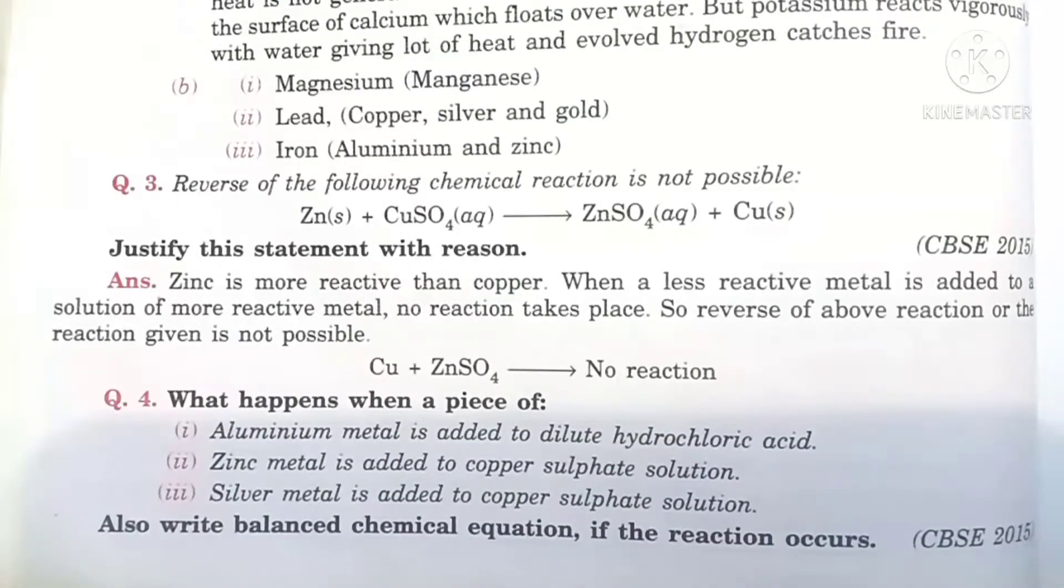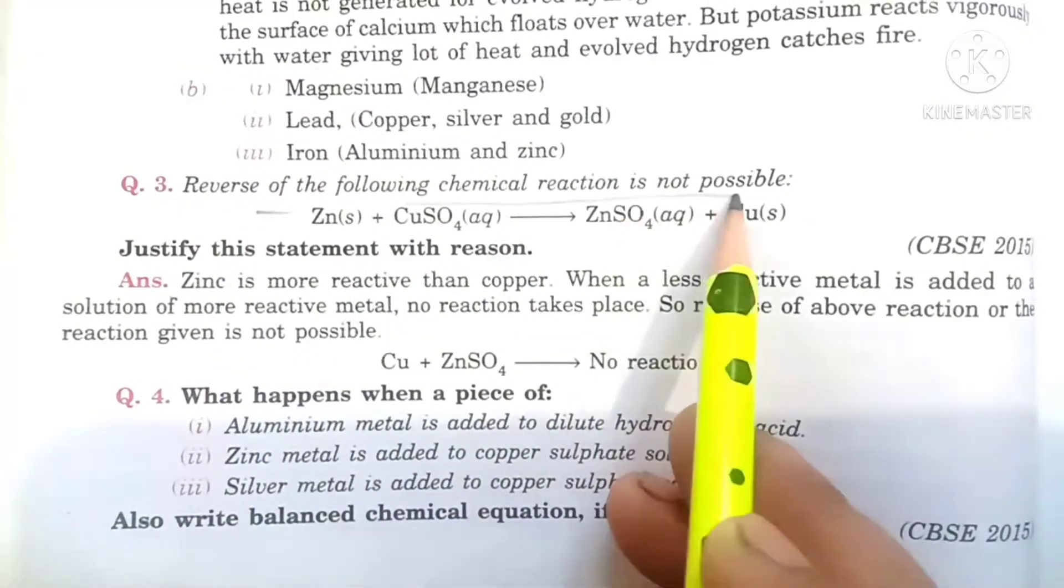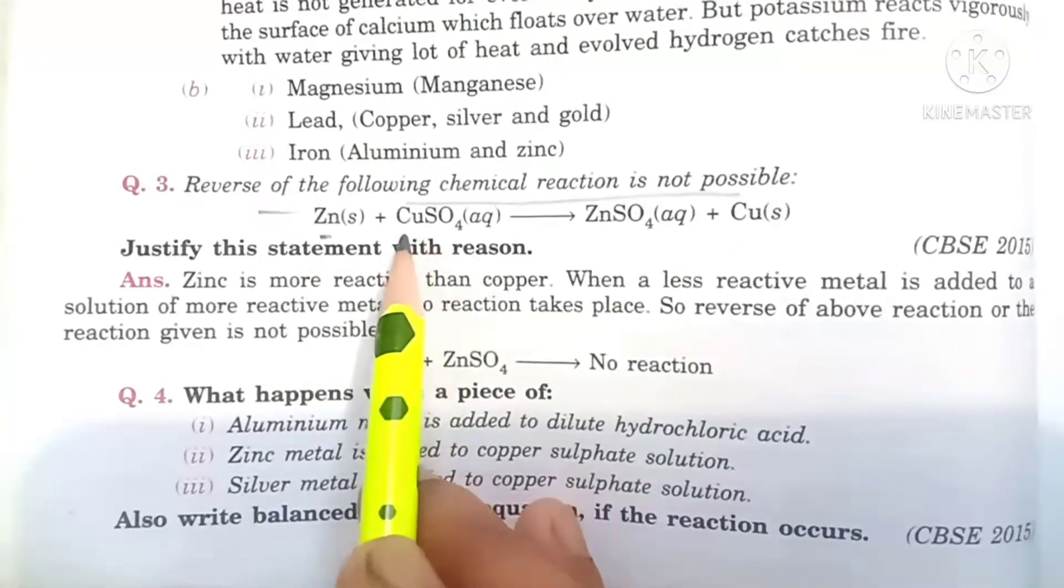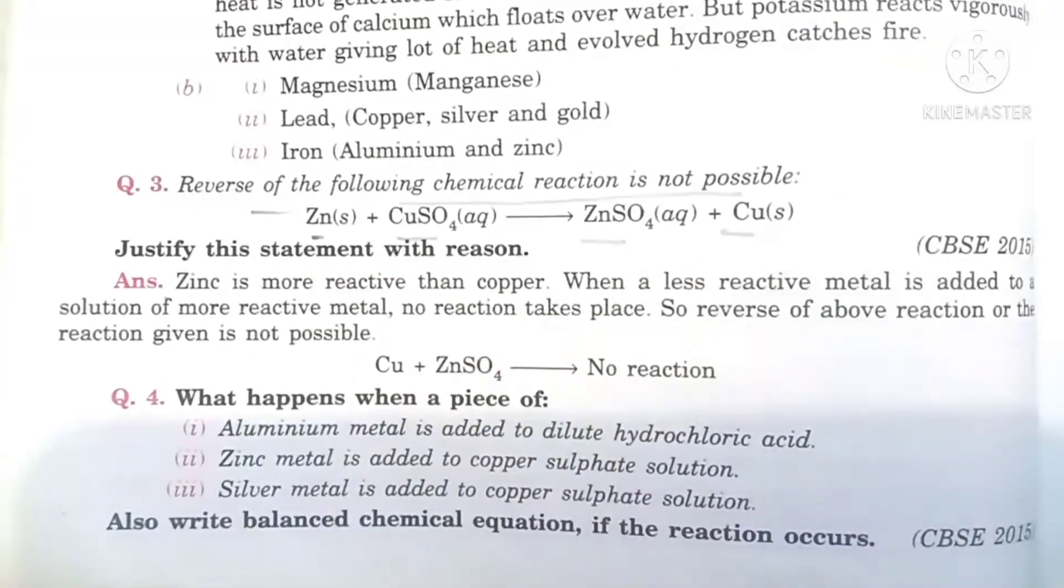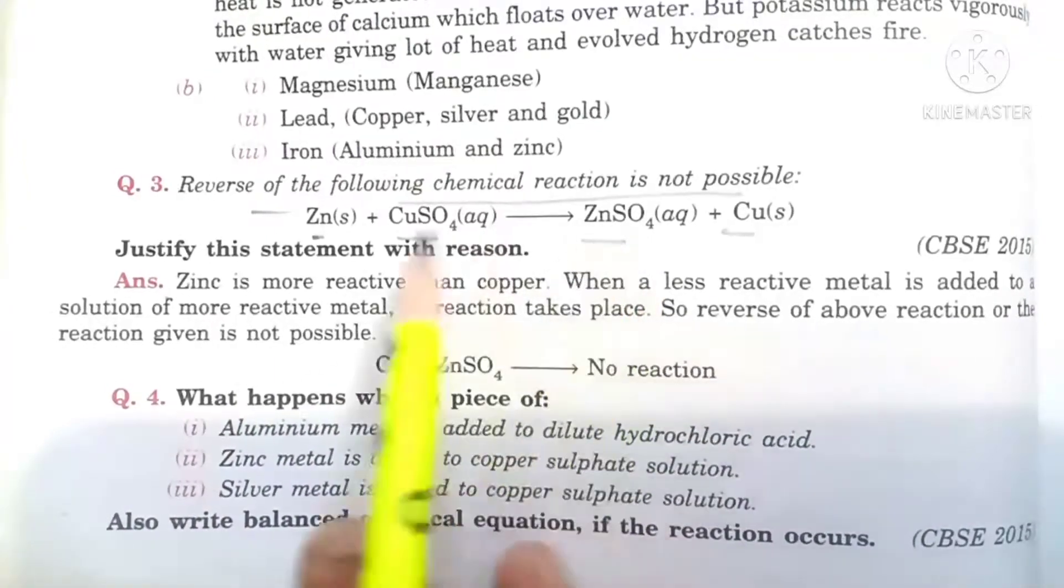In this video I will discuss with you important questions for 10th class board exam related to the science. Reverse of the following chemical reaction is not possible - you have been given a chemical reaction: zinc react with copper sulfate form zinc sulfate and copper. He says that if we reverse this reaction, these are our reactants and products.